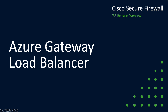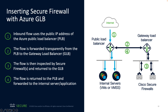The Gateway Load Balancer in Microsoft Azure allows simple deployment and scale when inserting Network Virtual Appliances, or NVAs. As you can see in this sample deployment scenario, the Azure Gateway Load Balancer is being used to transparently insert Cisco secure firewalls into the path of traffic flowing from the Internet into an internal server or application. The inbound flow uses the public IP address of the Azure Public Load Balancer as the destination, then is forwarded transparently to the Gateway Load Balancer. The secure firewall inspects the flow and if nothing violates the policy, the flow is returned to the Gateway Load Balancer, then to the Public Load Balancer, and forwarded to the internal server or application.